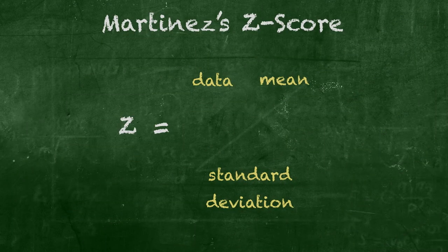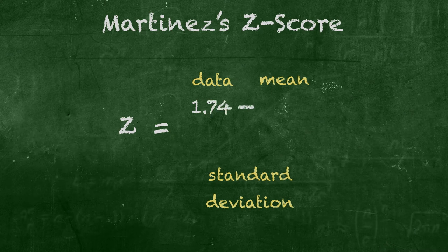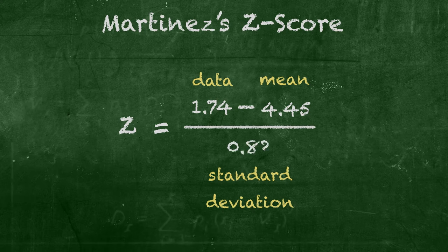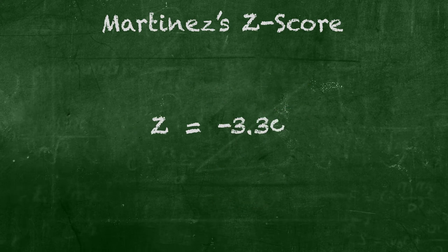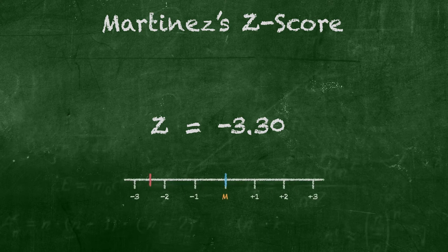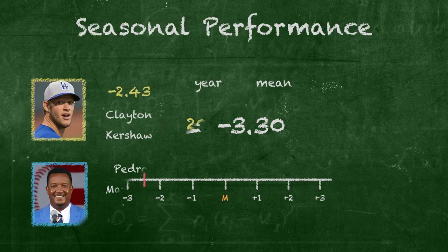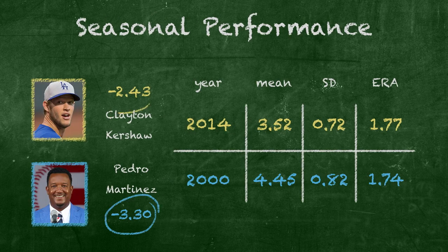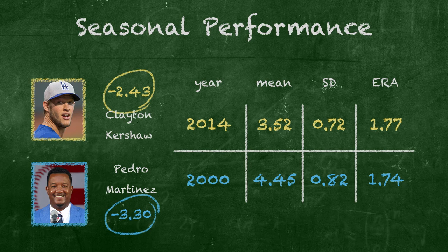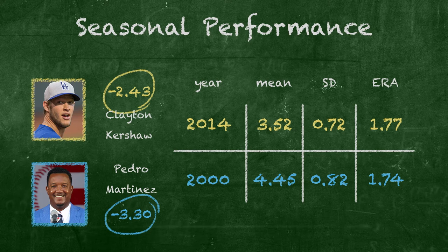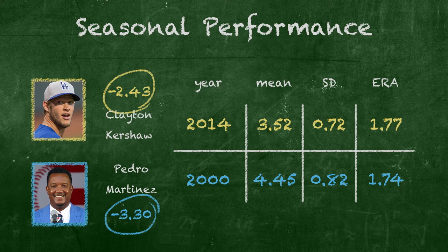Let's do Pedro Martinez's Z-score. We got 1.74 minus the mean of 4.45, all divided by a standard deviation of 0.82 — that's negative 3.30. Meaning Martinez's ERA was 3.30 standard deviations below the mean. As it turns out, Martinez's ERA was lower within his season's average compared with Kershaw's ERA within his season's average. Since the person with the lower Z-score performed better, we can say with a statistical degree of confidence that Pedro Martinez seems to have had a more impressive season. Sorry, Dodgers fans.